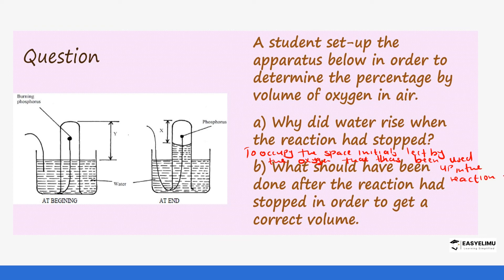The next part asks: what should have been done after the reaction had stopped in order to get the correct volume? You should allow the apparatus to cool so that the gases contract and you can get an accurate volume reading. The keyword here is 'correct volume.' That brings us to the end of this question.